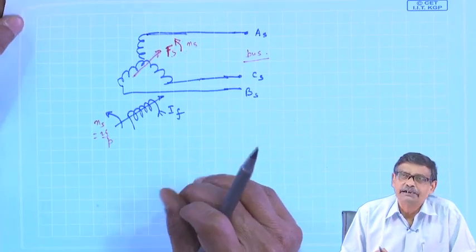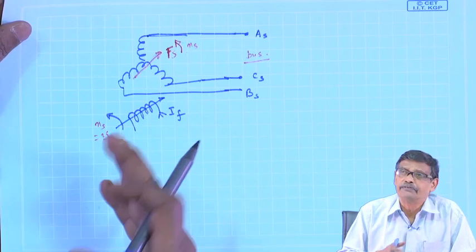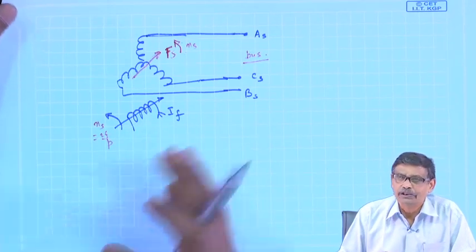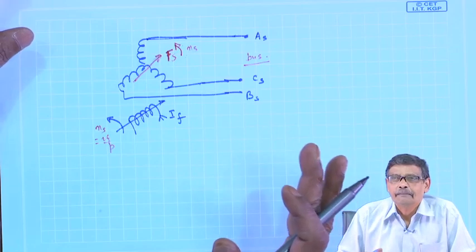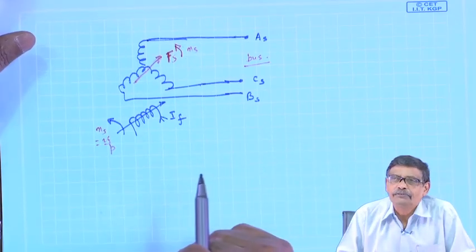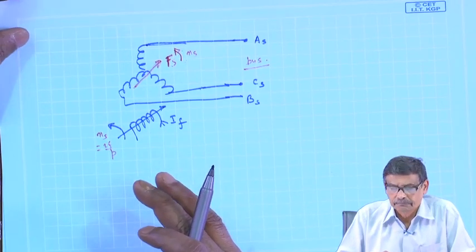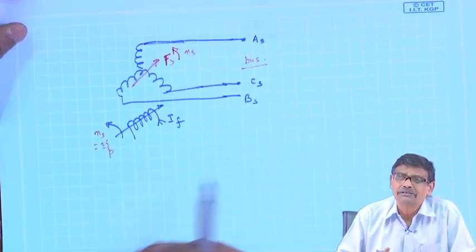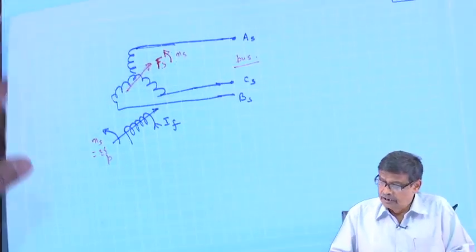You can operate a synchronous machine at various power factors by adjusting the field current. In an induction machine, you cannot do that — the exciting current is drawn from the bus itself. That magnetizing current causes a lower power factor, particularly at lighter load conditions.